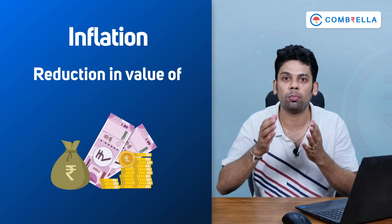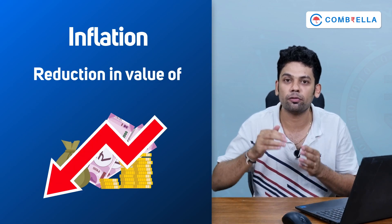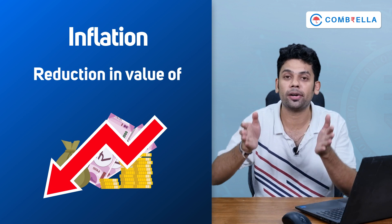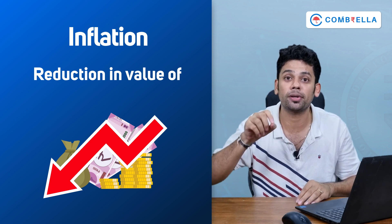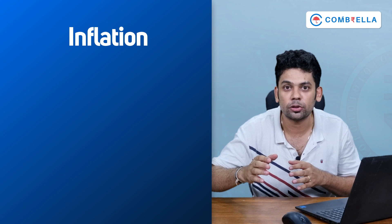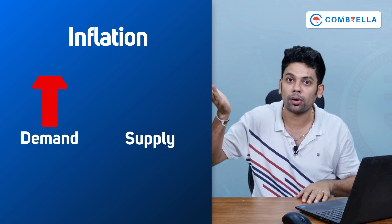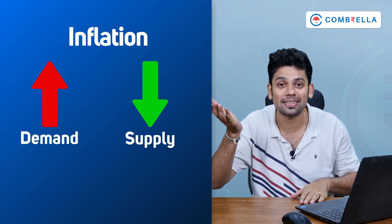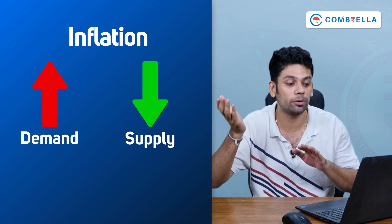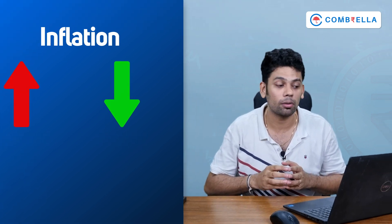Inflation means the value of money reduces. Which means in future, what you can buy for 100 rupees will be less than what you can buy for 100 rupees today. And inflation happens due to demand and supply gap. If the demand is more and supply is less, then the prices will increase and it will lead to inflation. But why is the demand more?